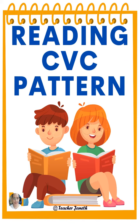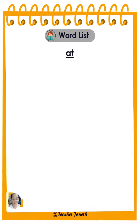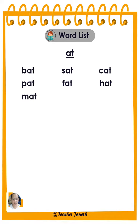Reading CVC Pattern Word List: bat, pat, mat, sat, fat, cat, hat, rat.